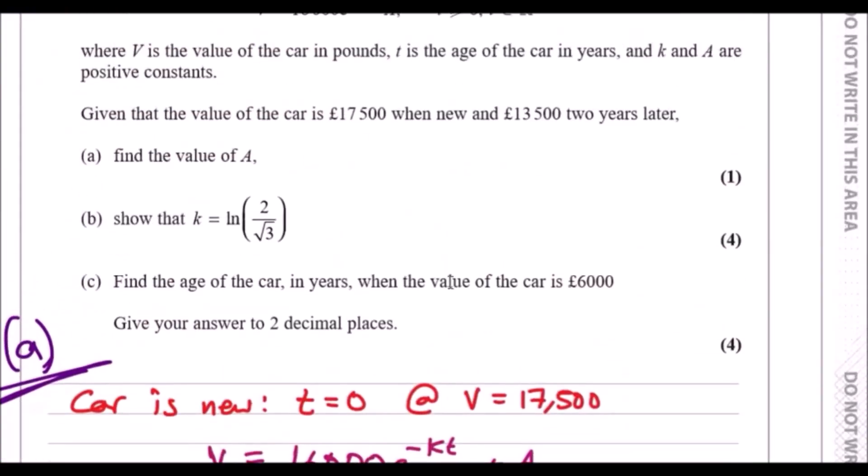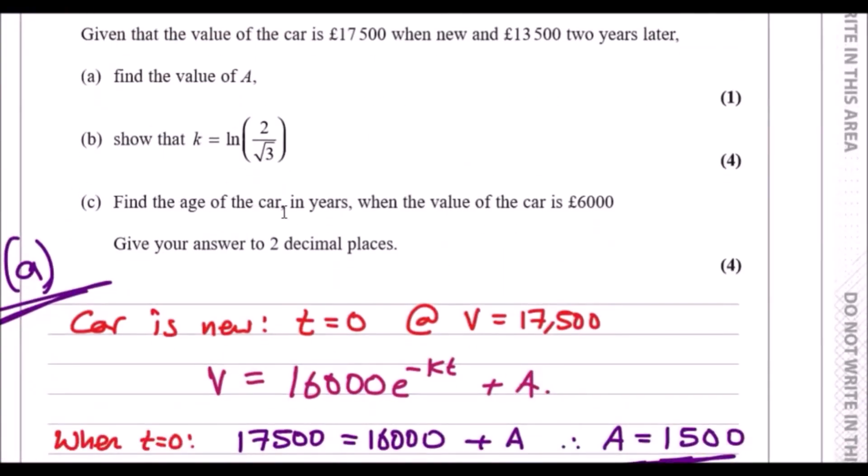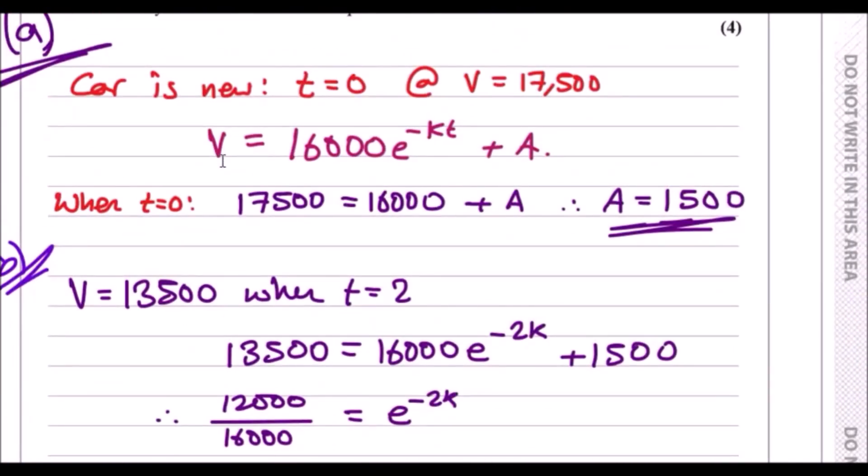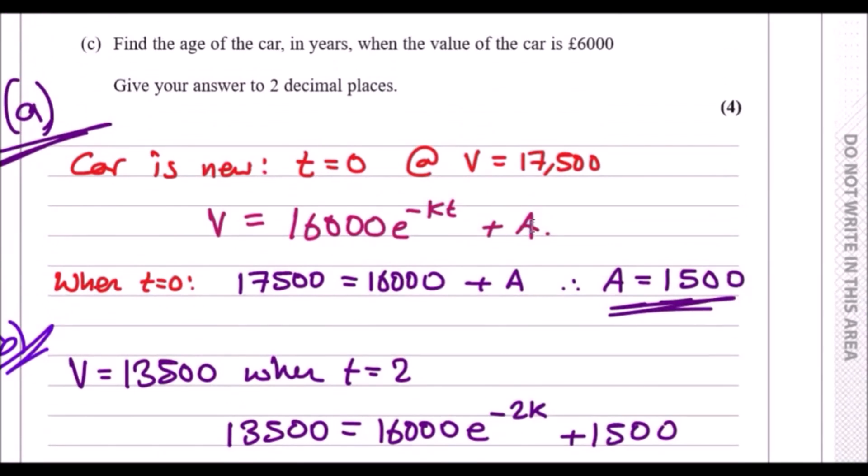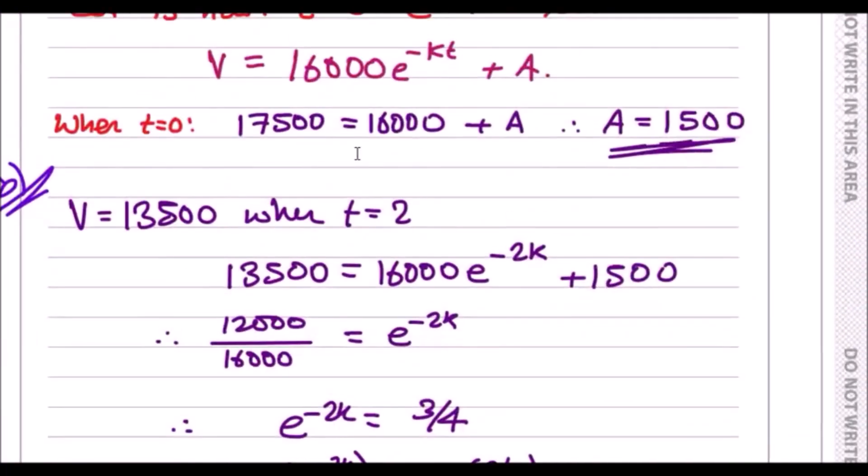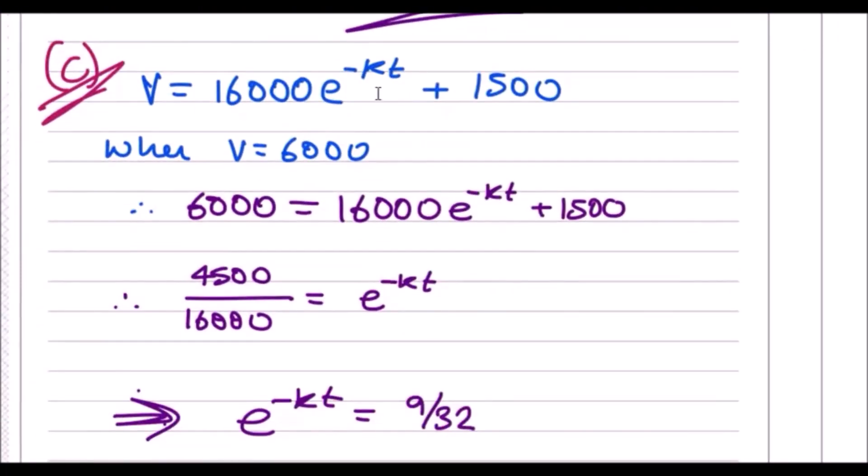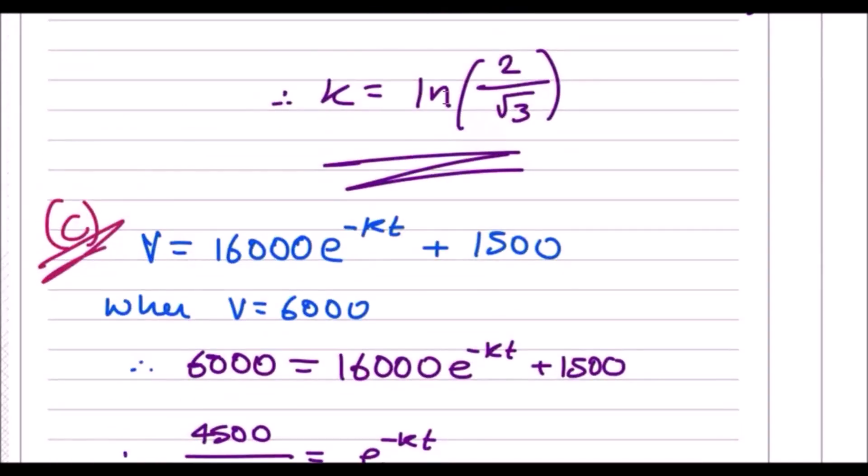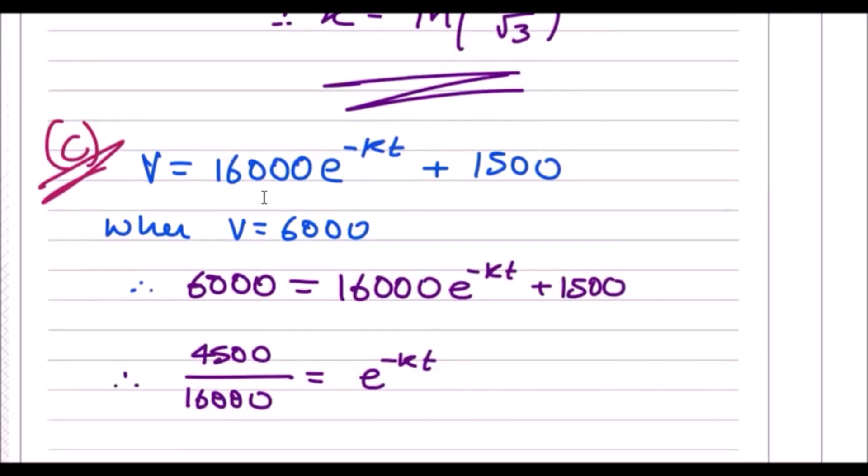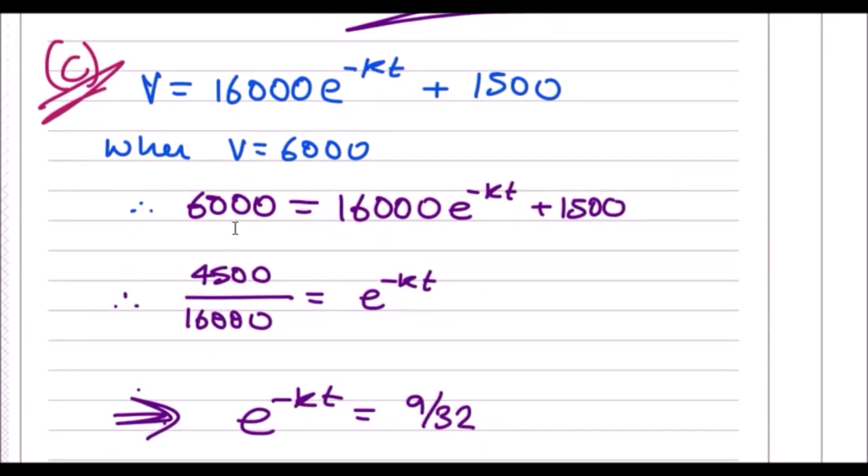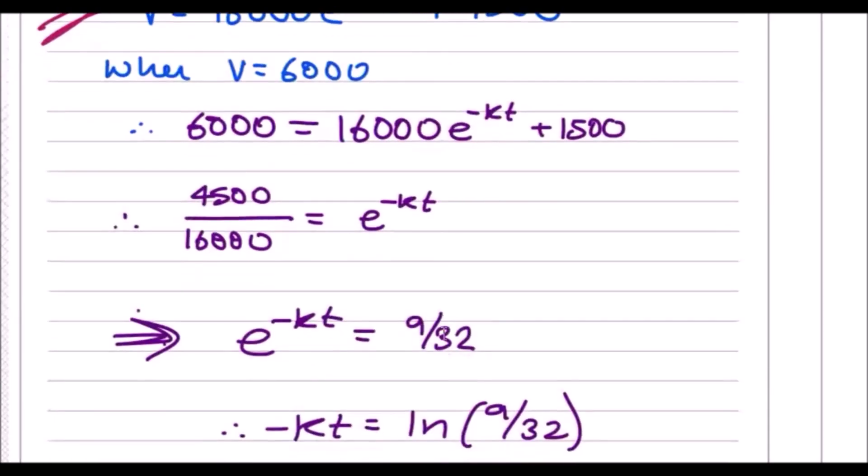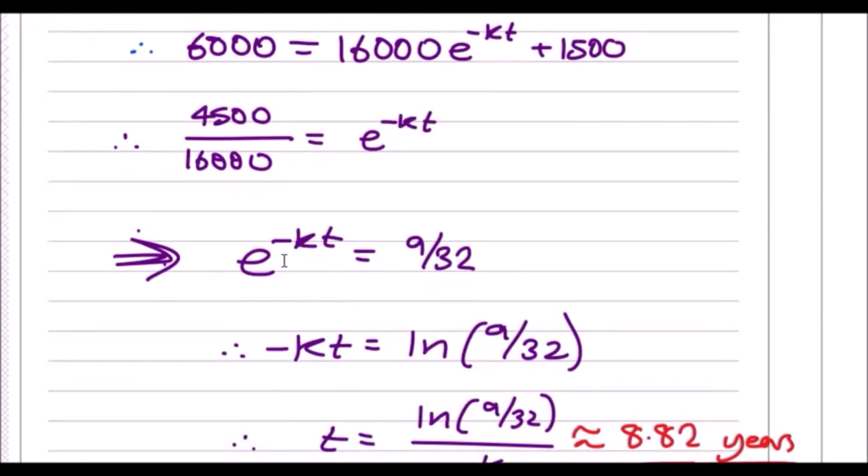For part c, find the age of the car in years when the value V is 6,000. Just substitute 6,000 for V, and find the value t. You've got everything else now—you've got k, you've got a, just find t when V is 6,000. I didn't put the value k in now because it would make your calculation more complicated, so just call it k for now and work your way through it. Replace V with 6,000, subtract 1,500 to get 4,500, divide by 16,000 and simplify to get 9 over 32.